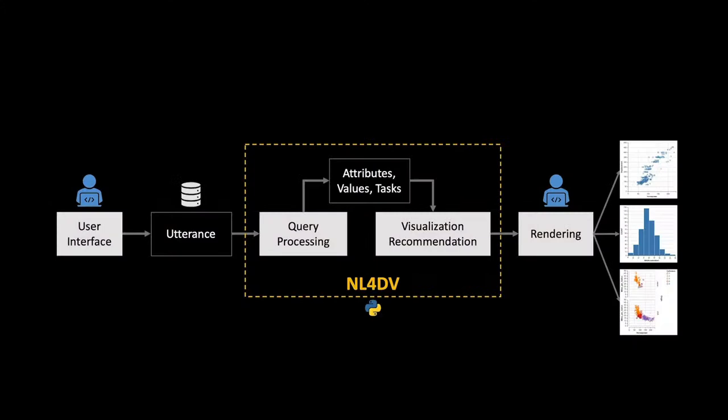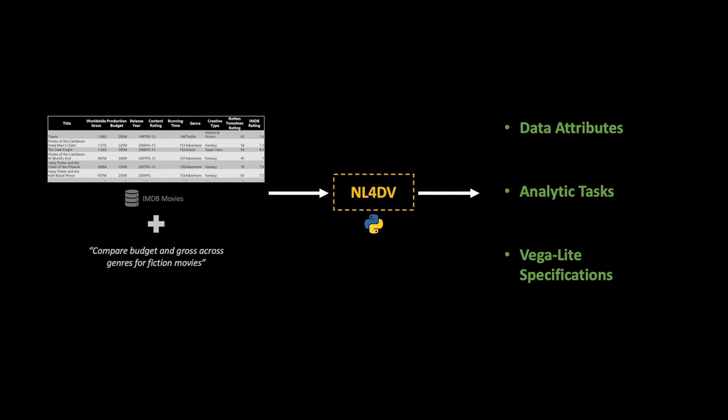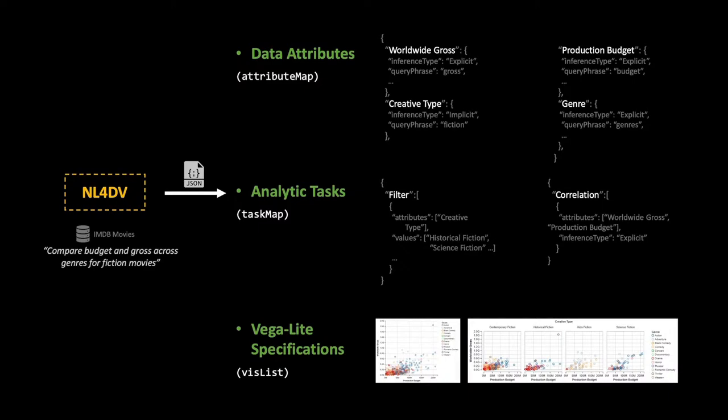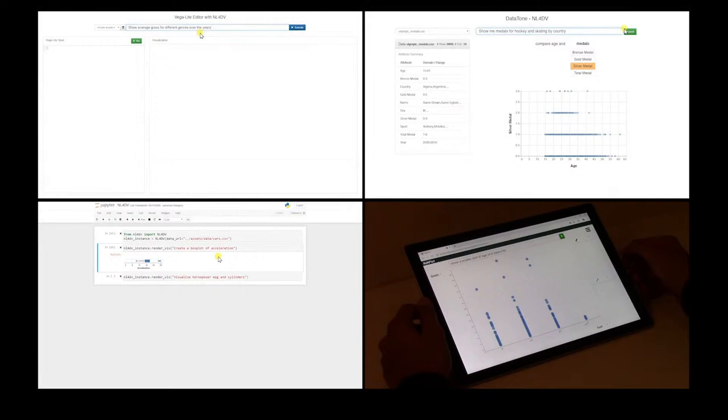We present NL4DV, a toolkit that helps prototype natural language interfaces for data visualizations. NL4DV provides a high-level Python API for interpreting natural language queries. The API automates the core tasks of processing natural language queries to infer relevant information and determine appropriate visualizations, allowing visualization developers to focus more on designing and implementing the user interface.